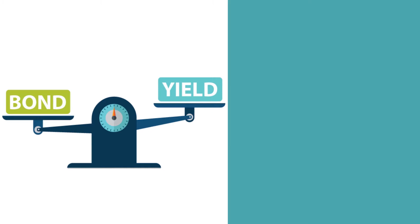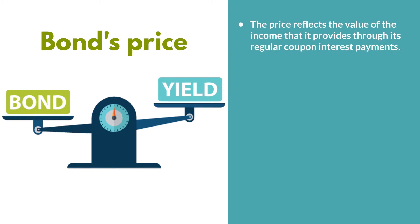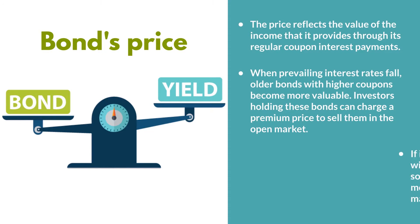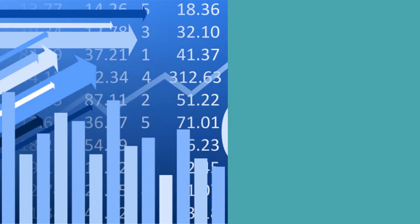This concept allows the investor to understand that the critical feature of the bond market is a bond's price. The price reflects the value of the income that it provides through its regular coupon interest payments. When prevailing interest rates fall, older bonds with higher coupons become more valuable. Investors holding these bonds can charge a premium price to sell them in the open market. And conversely, if interest rates rise, older bonds with lower coupons will have to be sold at a discount to make them more attractive in the current market.